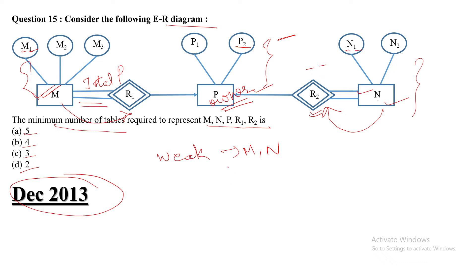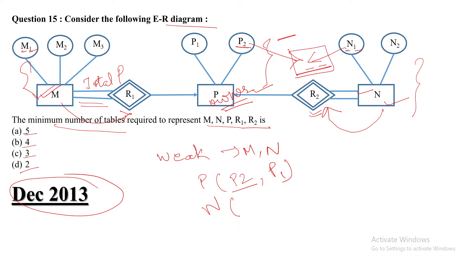Now create the tables. Table P has its own key attribute P2 and then P1. For entity N — since it has only a partial key, we cannot create a table using just the partial key. So we combine entity N's partial key N1 with the owner entity P's key attribute P2 to form the combined key. The full table for N includes N1, P2 as key attributes, plus N2.